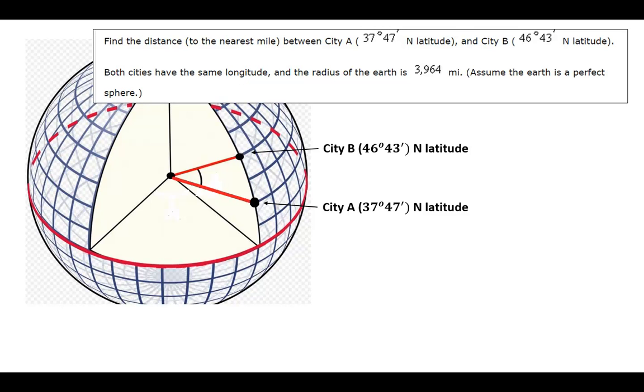I wanted to explain one of the application problems that was on quiz 2. The problem asks to find the distance to the nearest mile between City A, located at 37 degrees 47 minutes north latitude,